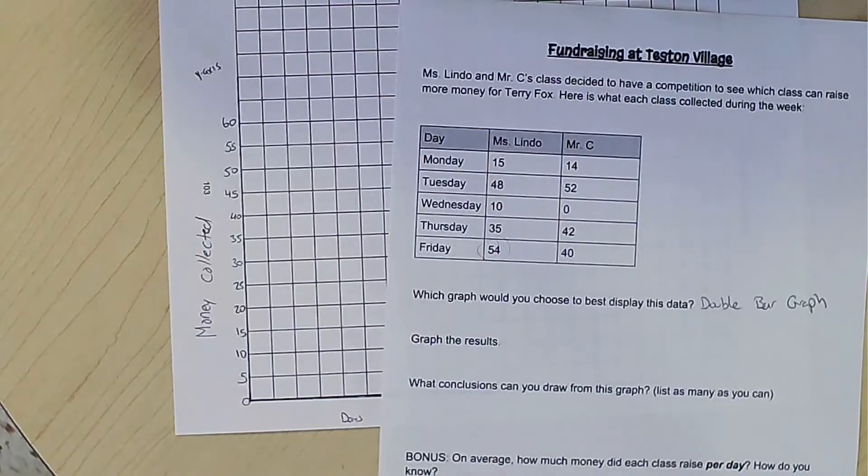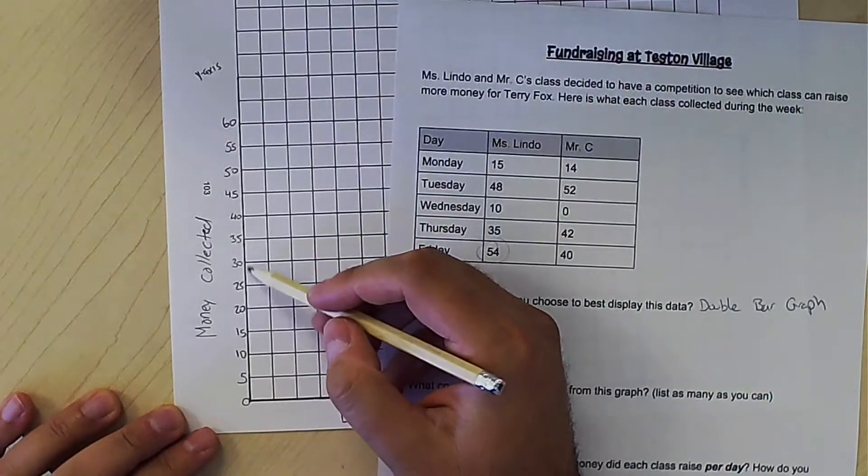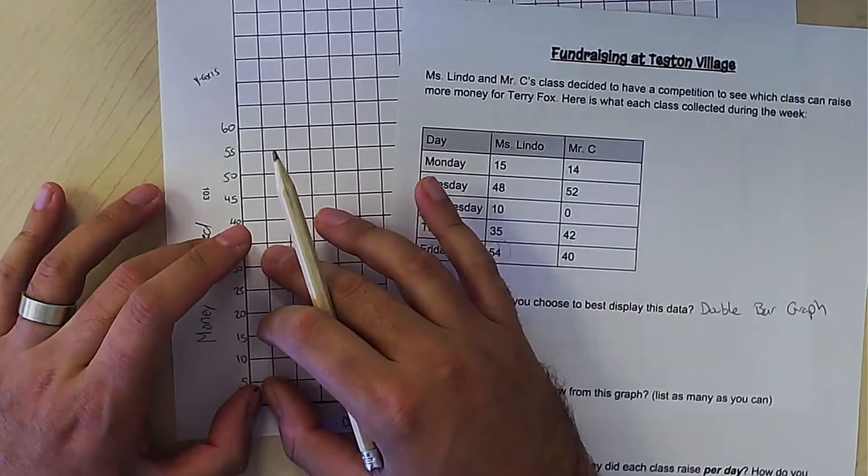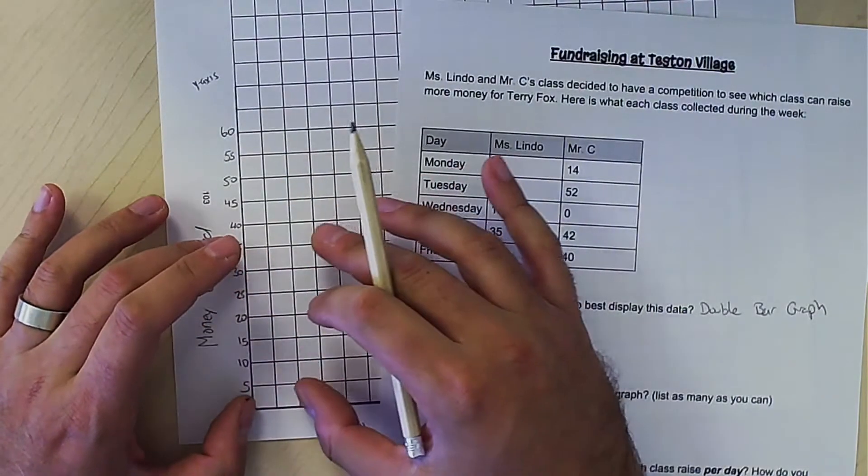What's another scale you could have used? A scale of 10 would also be good, because then you'd still go up to here and everything will be on one graph, which is what you want. You want it to be easy to read.